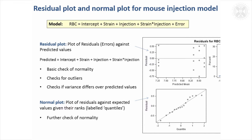So for this example, this plot here is a residual plot. These are the predicted values from the model, and the residuals are plotted against those predicted values. There's a bit of an art to interpreting these plots, but what you want to see is that there's no evidence of a real pattern in the data, and that they're reasonably similarly distributed regardless of what the value of the predicted mean is.